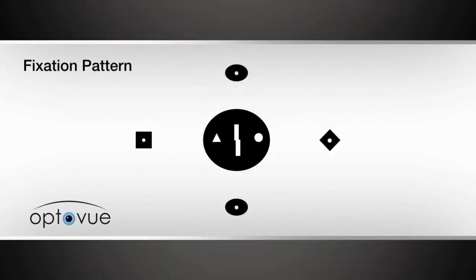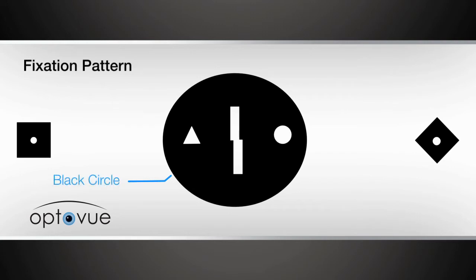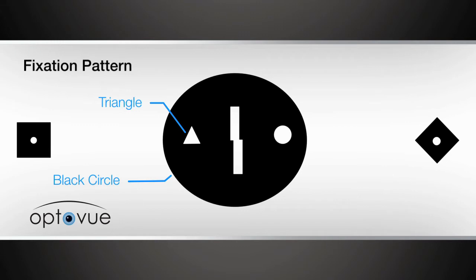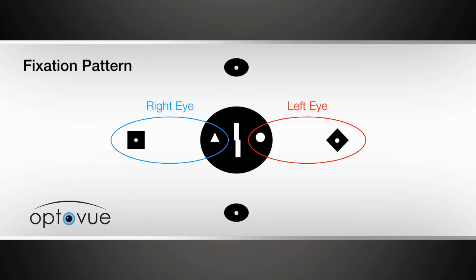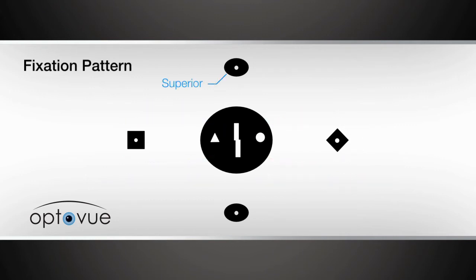Now let's look at the fixation pattern. The fixation pattern of the iCam has six objects. A large black circle in the center bisected by the focal bars contains a triangle for macular imaging of the right eye and a circle for macular imaging of the left eye. To obtain optic nerve images, use the square for the right eye and the diamond for the left. It may be beneficial to show the patient the fixation card and point out the shapes prior to imaging. There are two ovals — one for superior and the other for inferior. Any other locations of interest can be achieved by using the external fixation.